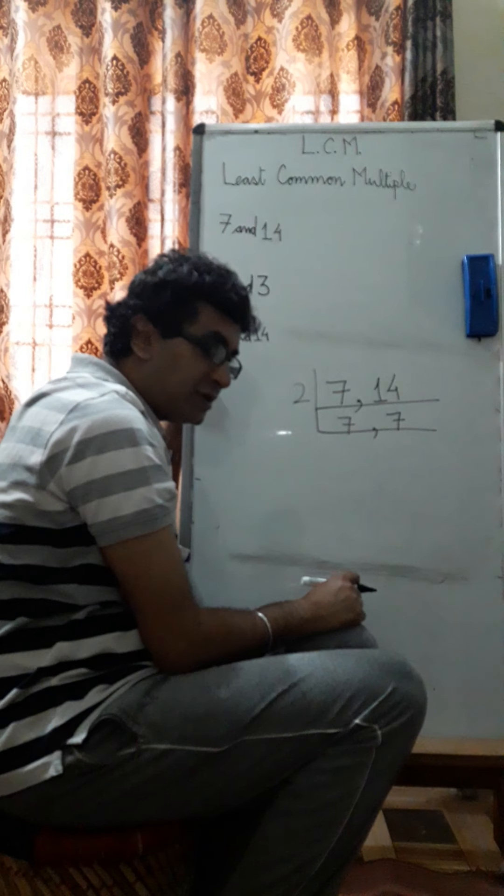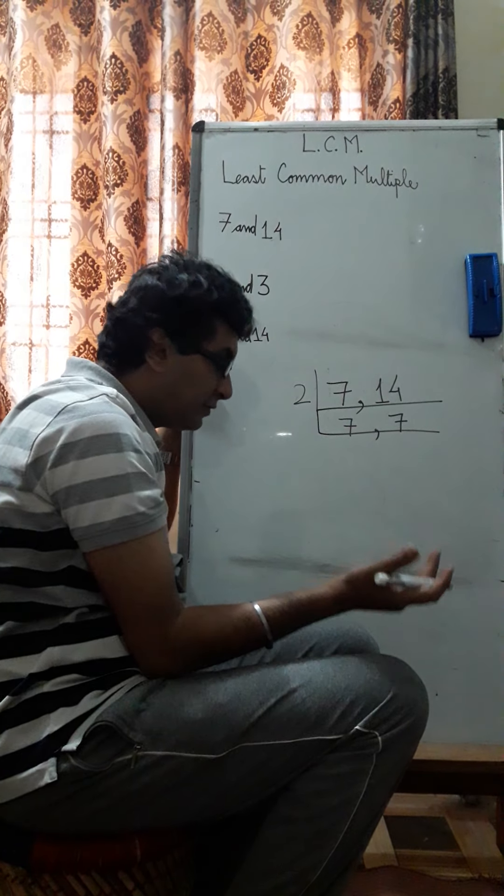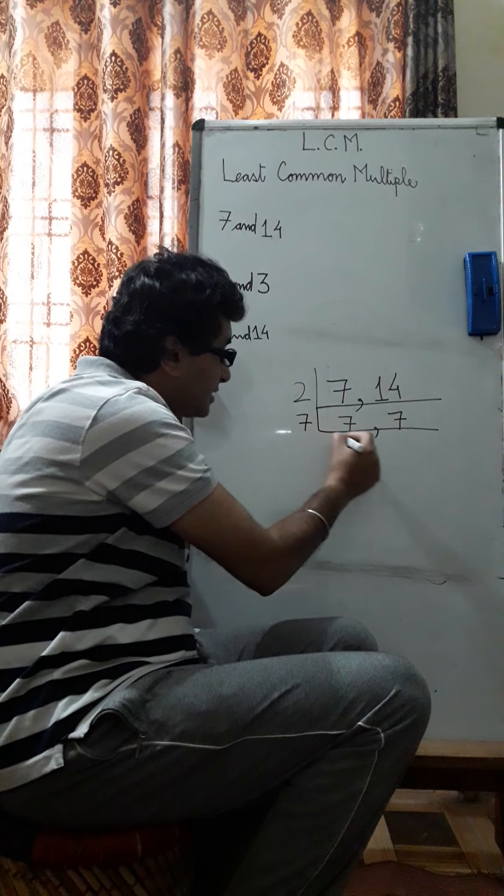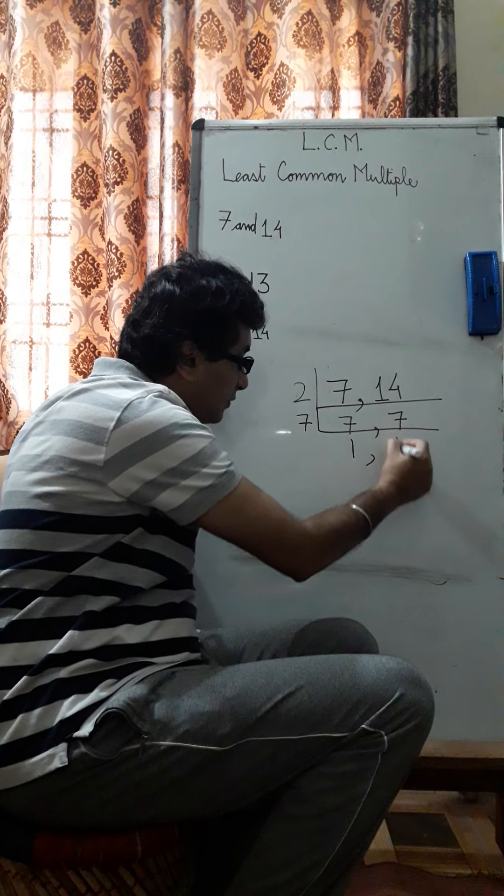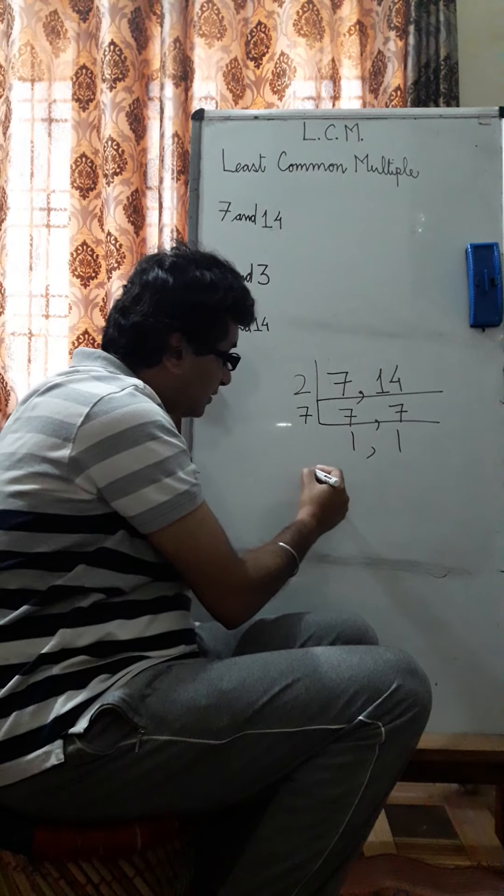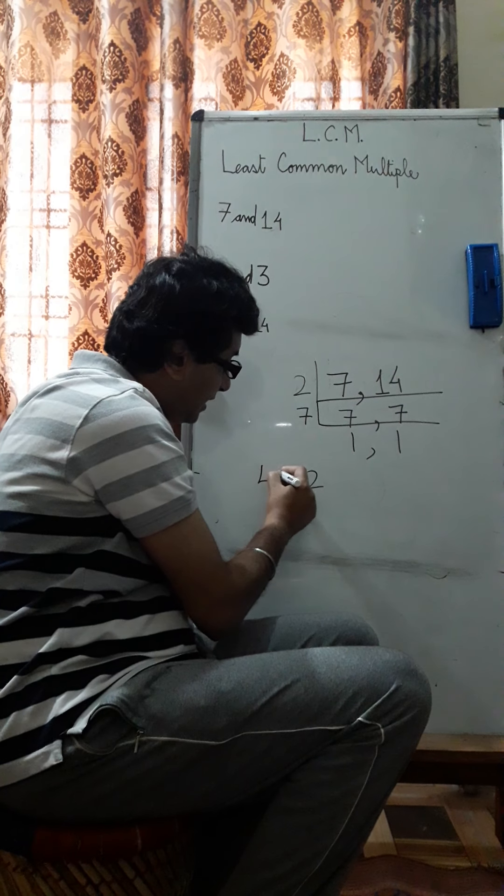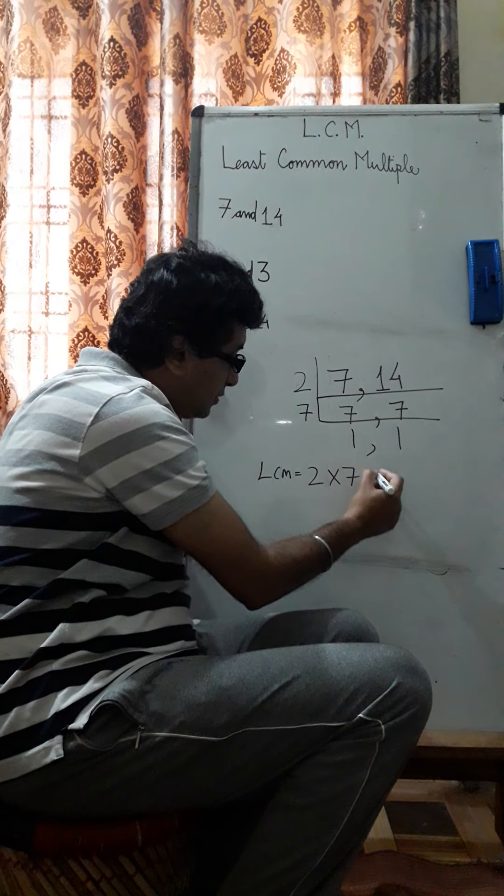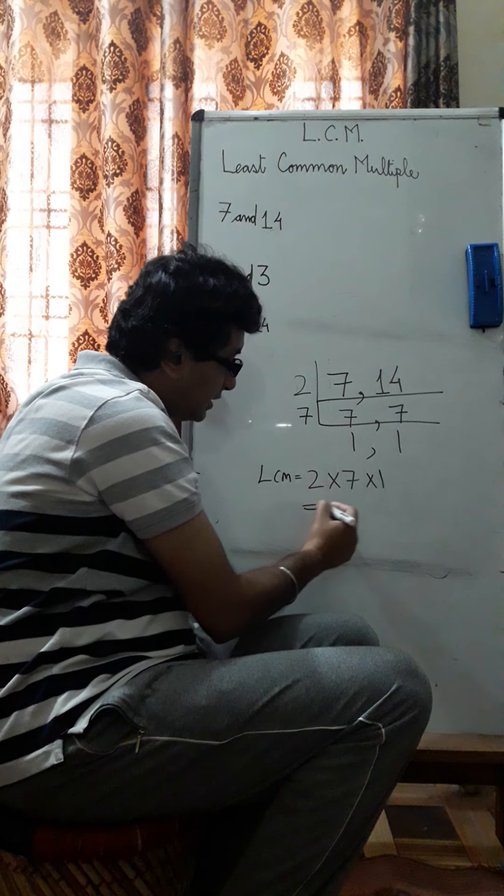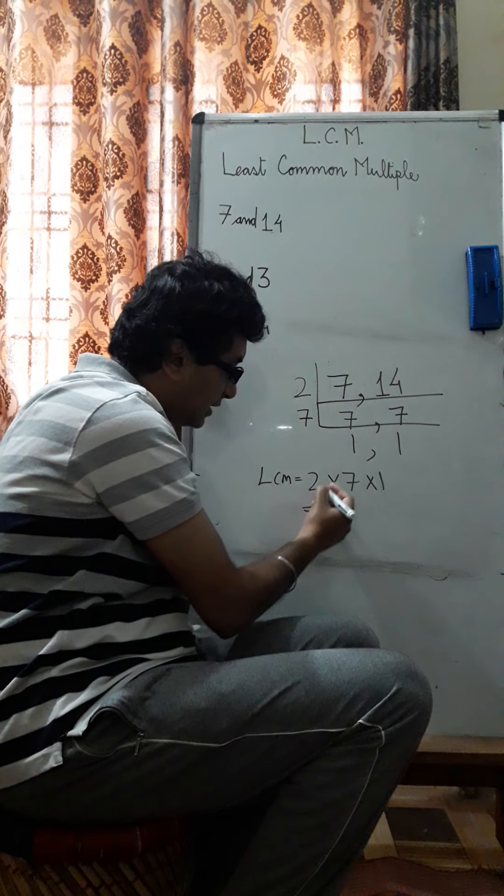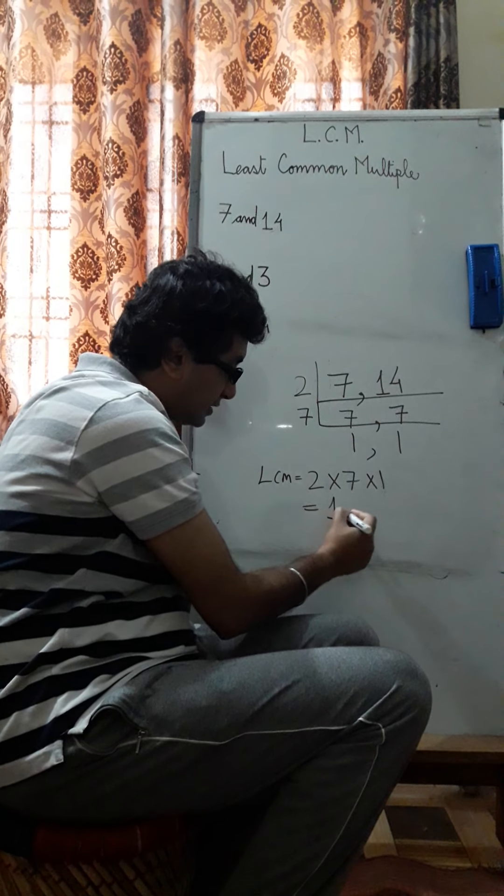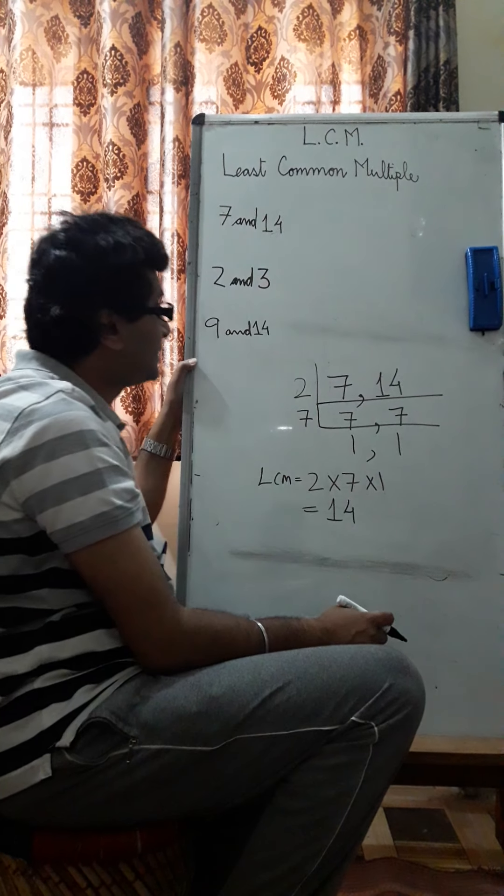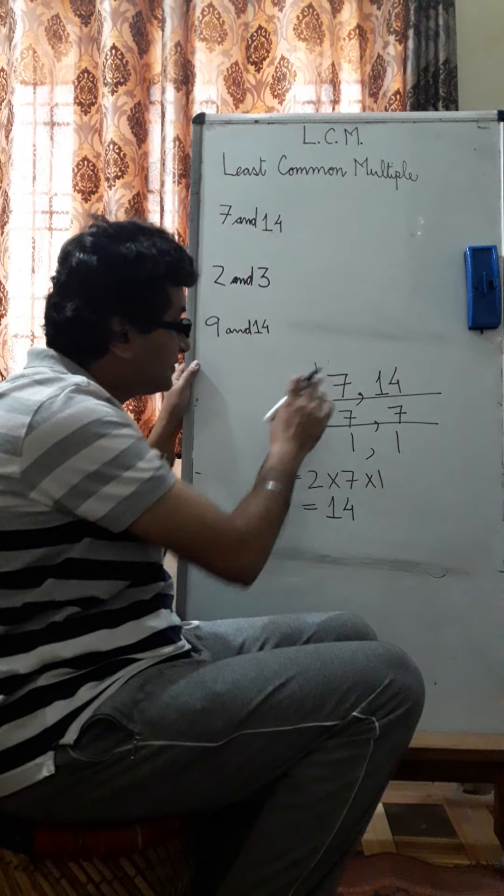Can 3 divide any of these numbers? No. The next prime number 5? No. But 7? Yes. How many times? One time and one time. So 2. So LCM will be 2 into 7 into 1. Even if you don't write into 1, it's alright. 2 into 7 is 14. So the LCM is 14 of 7 and 14.